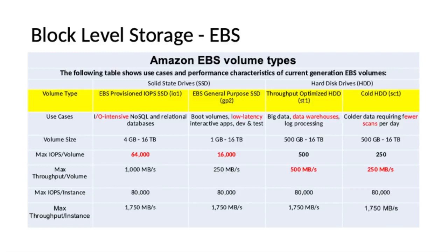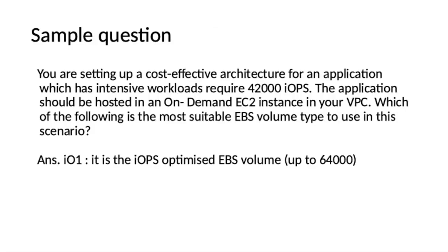Sample question: You are setting up a cost-effective architecture for an application with intensive workloads requiring 42,000 IOPS. The application should be hosted on an on-demand EC2 instance in your VPC. Which is the most suitable EBS volume type? The answer is IO1, because it is the IOPS-optimized EBS volume and can give up to 64,000 IOPS per volume. You can expect similar questions in your exam.